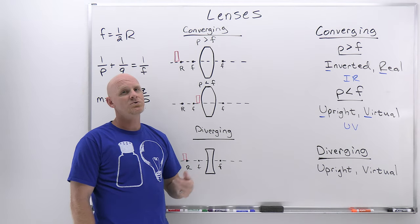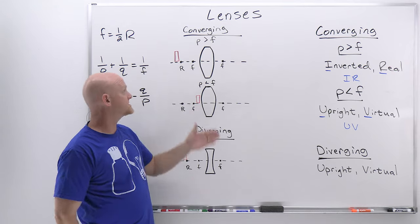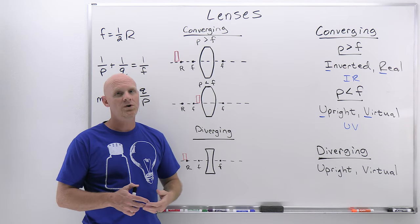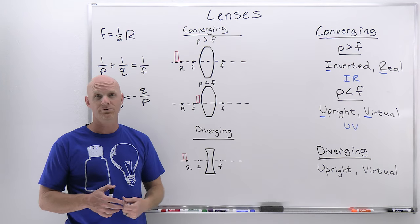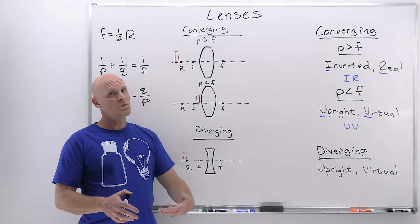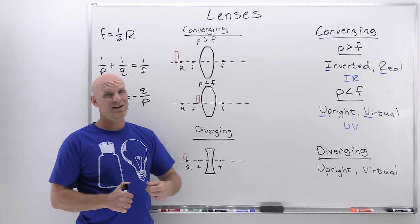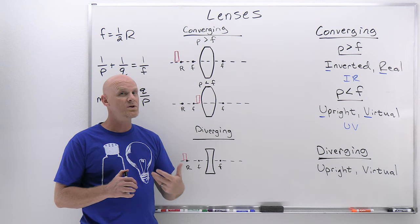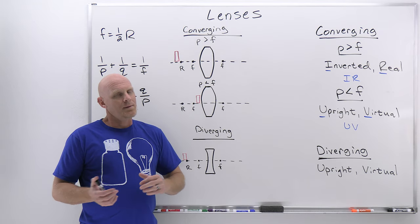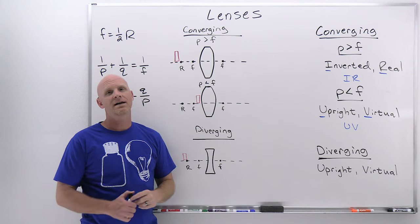With a converging lens, analogous to a concave mirror, you have a chance that the light rays will converge. If the object distance is greater than the focal length — if the object is placed further from the lens than the focal distance — you get a real image. But if the object is placed closer to the lens than the focal distance, where P is less than F, the light rays won't converge; you'll get a virtual image instead. So the converging lens is analogous to a concave mirror, and the diverging lens is analogous to a convex mirror.